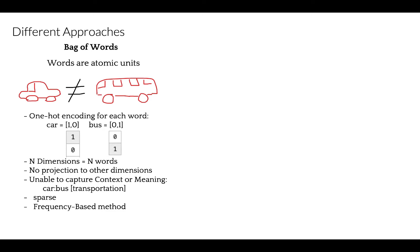For example, the approach cannot capture simple relationships, such as determining that the words 'car' and 'bus' both refer to a vehicle and are often discussed in the context of transportation. Words are encoded as one-hot vectors — each word occupies one dimension and has nothing to do with the rest, with no projection along the other dimensions.